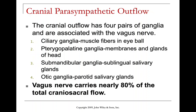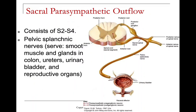The cranial parasympathetic outflow has four pairs of ganglia associated with the vagus nerve. The ciliary ganglion goes to muscle fibers in the eyeball; the pteropalatine ganglion goes to membranes and glands of the head; the submandibular ganglion goes to the sublingual salivary glands; and the otic ganglion goes to the parotid salivary glands. The vagus nerve carries nearly 80% of total craniosacral outflow. The sacral portion travels through S2-S4 via pelvic splanchnic nerves to smooth muscle and glands in the colon, ureters, urinary bladder, and reproductive organs.